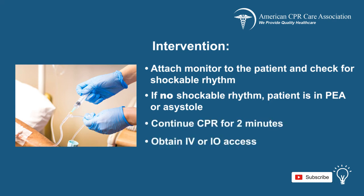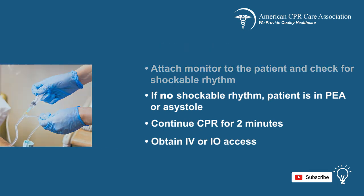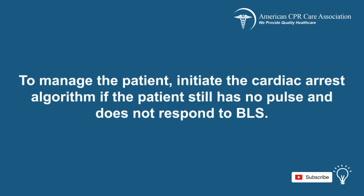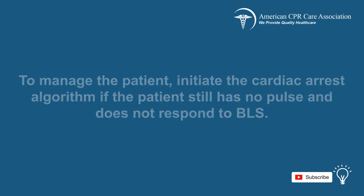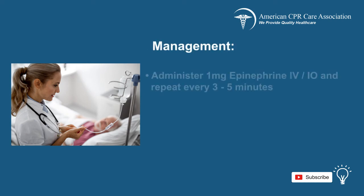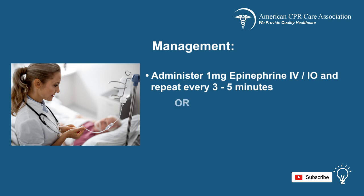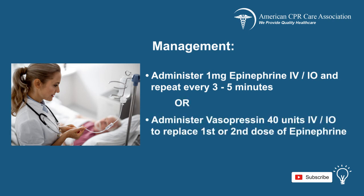Continue CPR for two minutes and obtain IV or IO access. Initiate the cardiac arrest algorithm if the patient still has no pulse and does not respond to BLS. Once IV or IO access has been obtained, administer the following drugs: Epinephrine at a dose of 1 milligram via IO or IV access, repeated every three to five minutes. Alternatively, give Vasopressin at 40 units via IV or IO to replace the first or second dose of epinephrine.